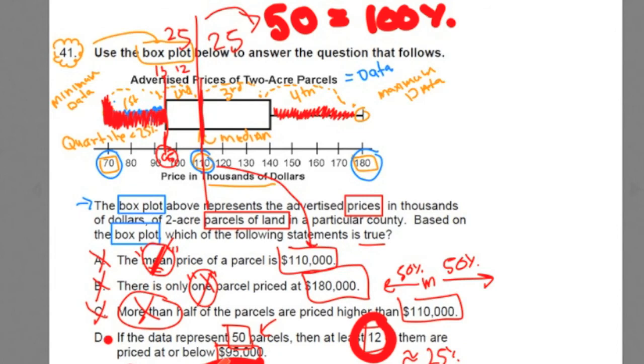This is a tricky problem, team. It's hard to visualize breaking up the 50 into these different chunks. It would have been a lot easier if they said there were 100 parcels of land. Then it would have been visually easier to be like, hey, if there's 100 parcels of land, each one of these is 25, 25, 25, 25. They had to throw in a 50, making it a little harder to see that 12 represents approximately the first 25 data points in that first quartile. So team, D is the answer.